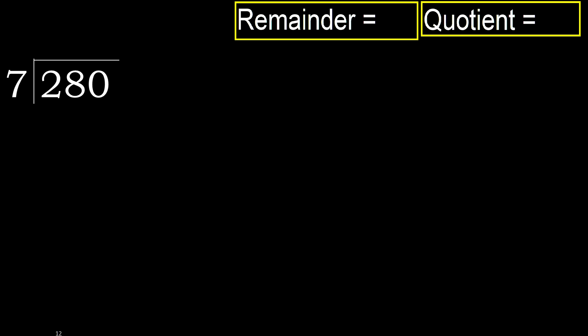280 divided by 7. 2 is less, therefore next. 28 is not less, therefore with 28. 7 multiplied by which number is nearest to 28 but not greater?